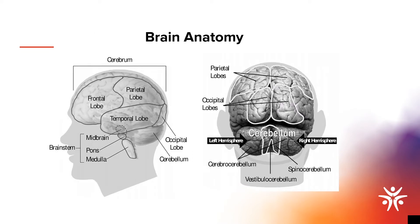Now let's go over some basic brain anatomy. The cerebrum is the largest part of the brain and is divided into two halves, known as the left and right hemisphere. Each hemisphere is divided into four sections called lobes: the frontal, parietal, temporal, and occipital. The frontal lobe is responsible for social and cognitive behaviors, as well as body movement. The parietal lobes are responsible for complex behaviors, including all behaviors involving the senses.